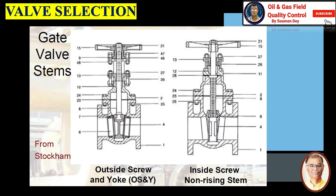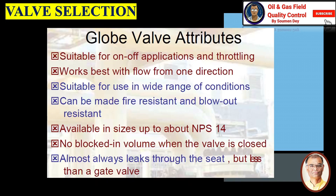Gate valve stems: outside screw and yoke (OS&Y), and inside screw non-rising stem shown on the right side. Now, globe valve: it is suitable for on and off position and throttling, works best with flow from one direction, more or less like a check valve, suitable for use in a wide range of conditions, can be made fire resistant and blowout resistant, available in sizes up to NPS 14.